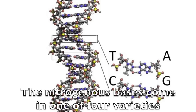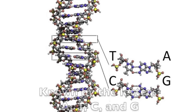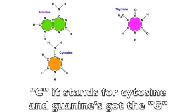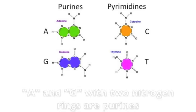The nitrogenous bases come in one of four varieties, known by the letters A, T, C, and G. A is for adenine, thymine's got the T. C stands for cytosine, guanine's got the G.